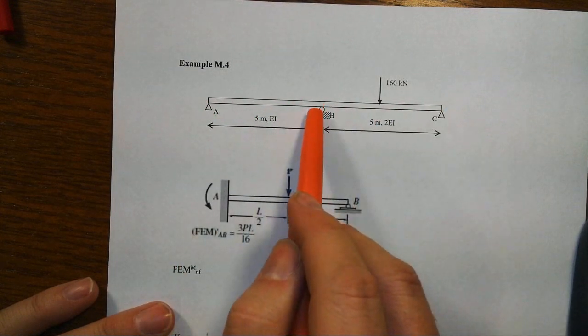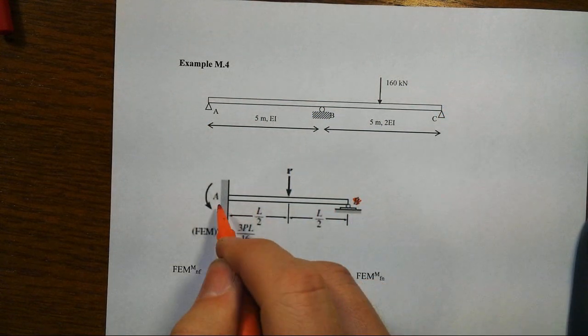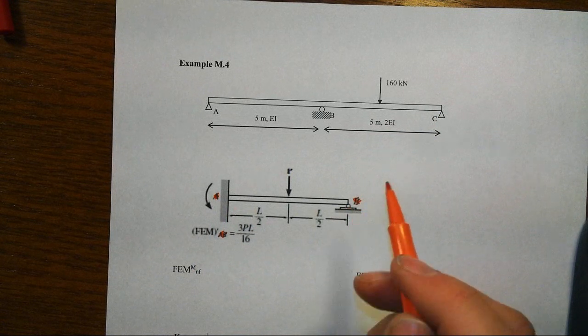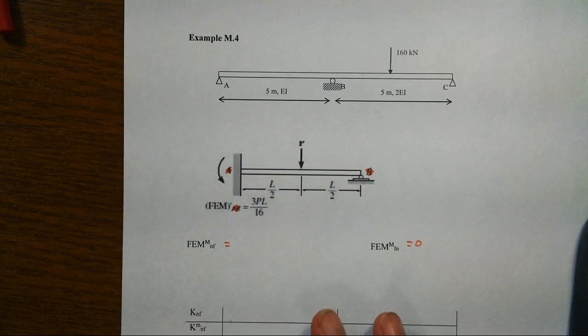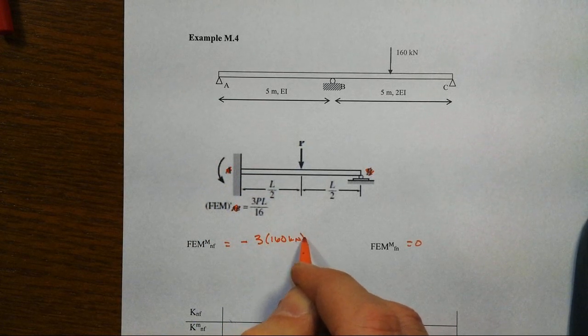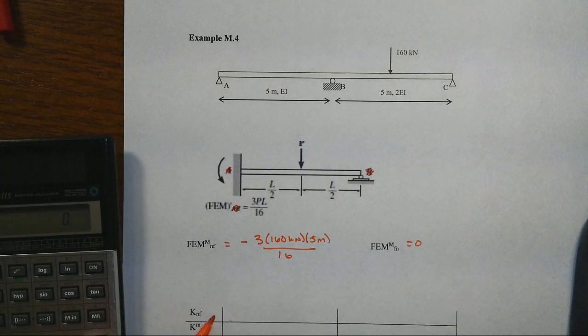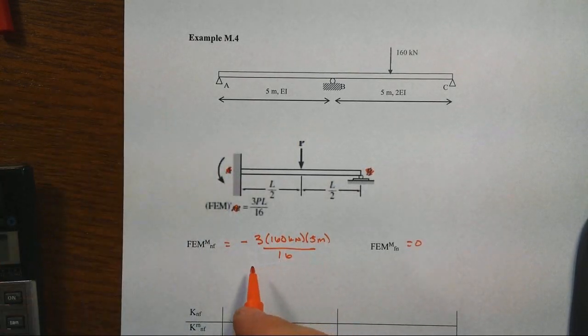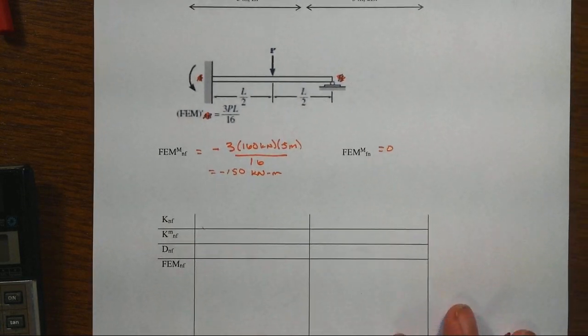We've got pinned ends, roller in the middle, we've got a mid-span 160 kilonewtons, and so here's this condition. Out here, ignore this little A and B business that you see here, just near and far end. For C, we've got, of course, a fixed-end moment of zero. There is no moment there. Over at the left, we get 3PL over 16. So the far end one, zero. This one will be, and it's going in the opposite direction, so really it's minus 3 times 160 kilonewtons times L, which is 5 meters divided by 16, and I believe that's going to be 150. So 3 times 160 times 5 divided by 16 is minus 150. So that's the fixed-end moment kilonewton meters, of course.